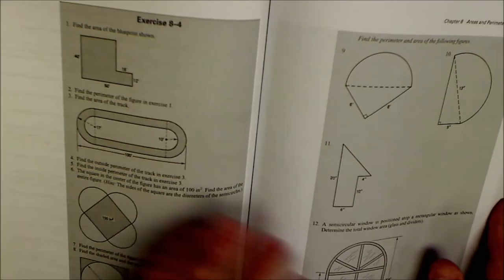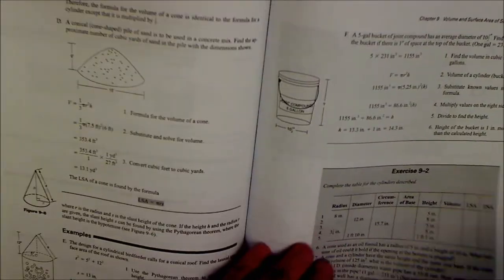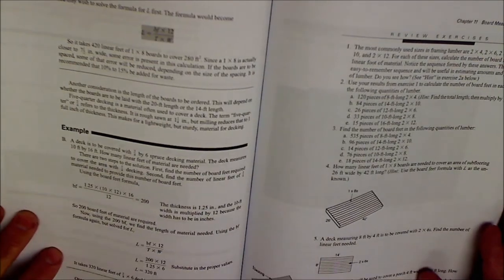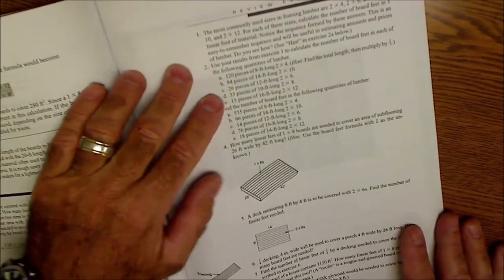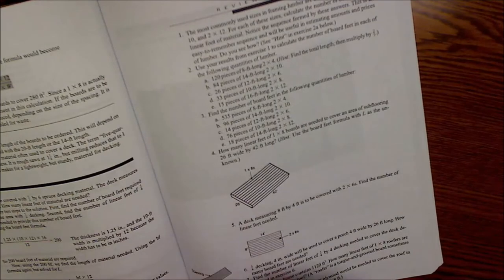what I'm working on is chapter 11 board measurement and then chapter 12 is pricing. So in chapter 11 here, board measurement, here's some of the problems right here. So here's some of the review exercises. I'll just do a few of these.